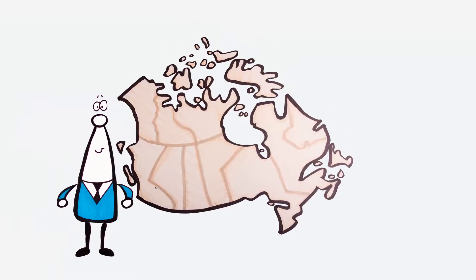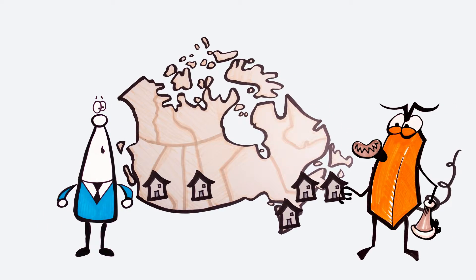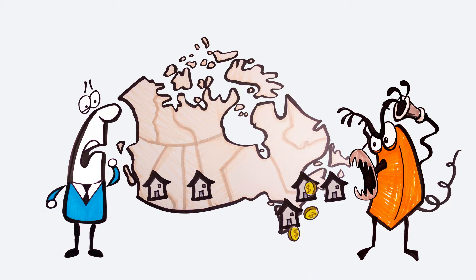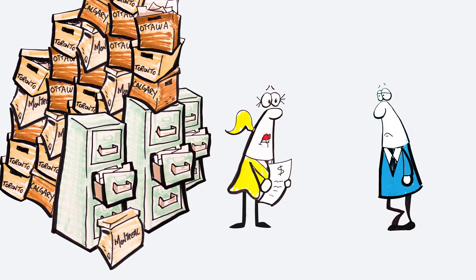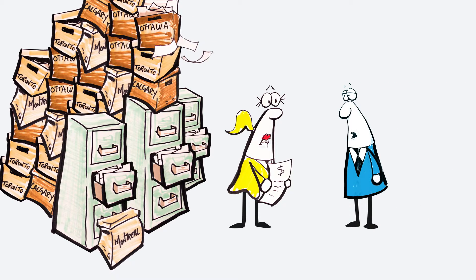And every time the company expands, Bill does it all over again, using different vendors in different cities, which means the offices aren't connected. The firm's accountant, Sue, is not happy.